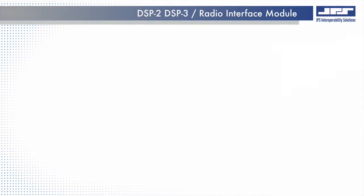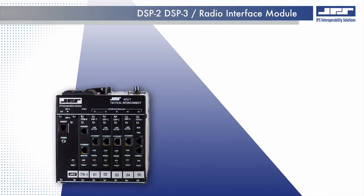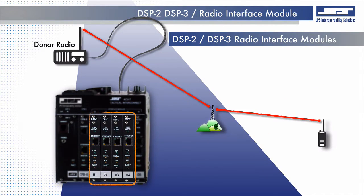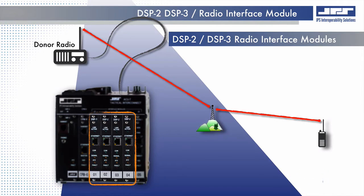The DSP radio interface module is available in two different variants: the DSP2 and DSP3 module. When installed in an ACU chassis, both versions provide the interface mechanism that allows sharing of LAN mobile radio voice communications using a complementary donor radio.